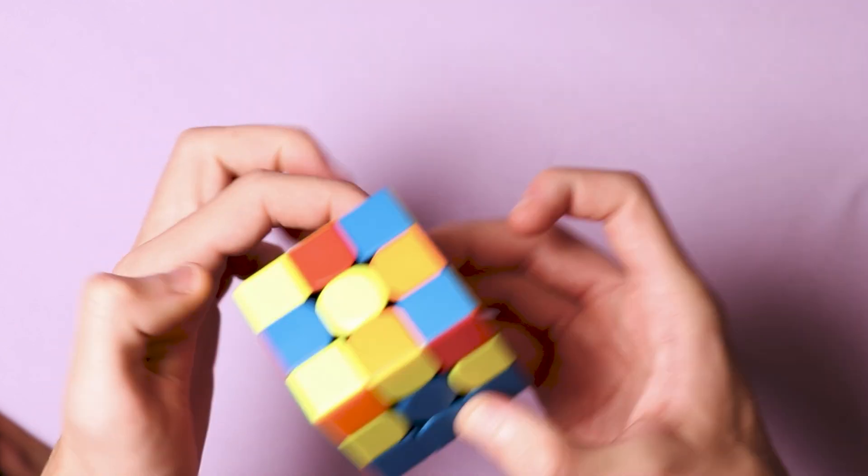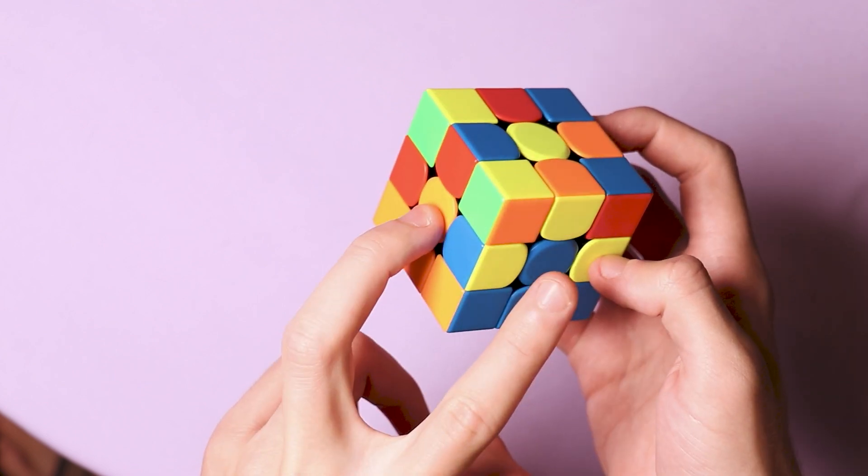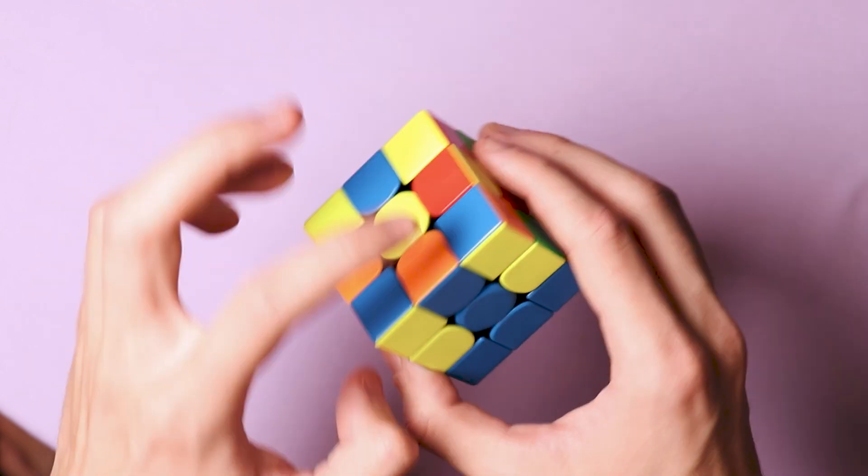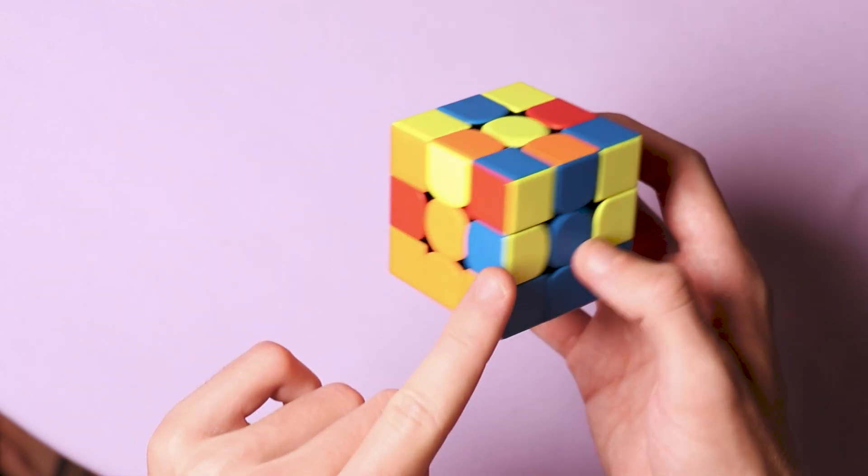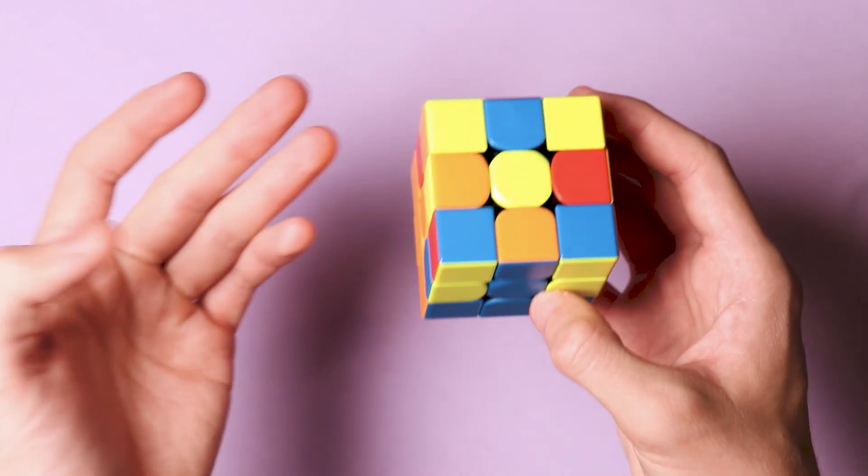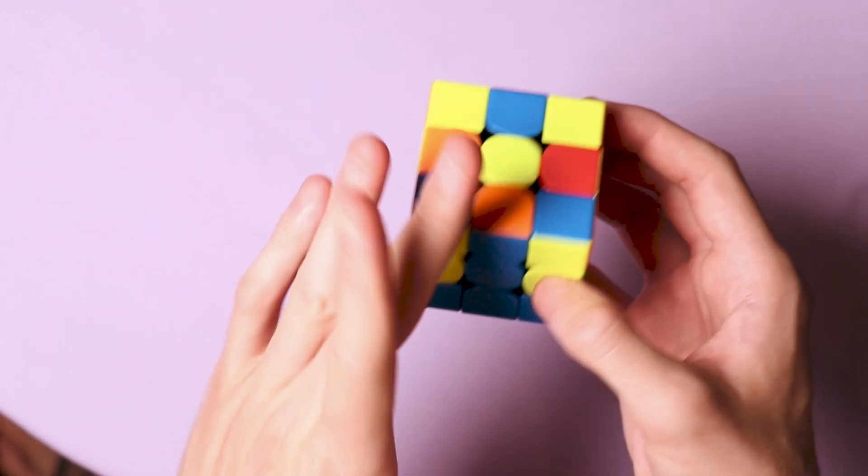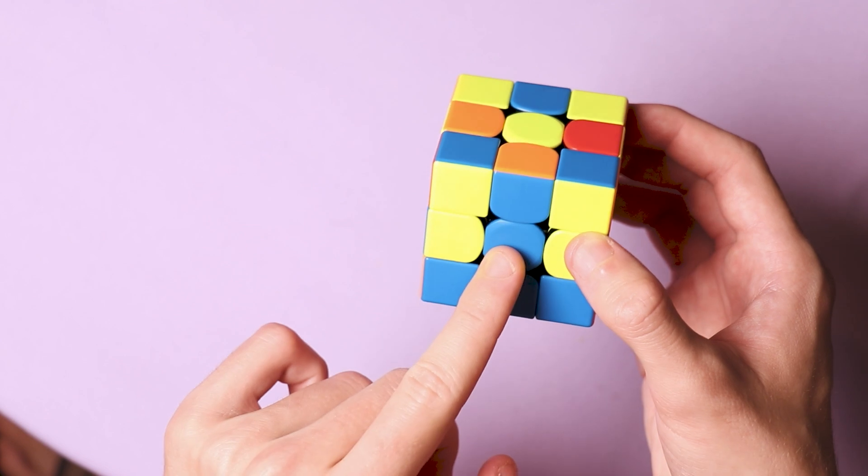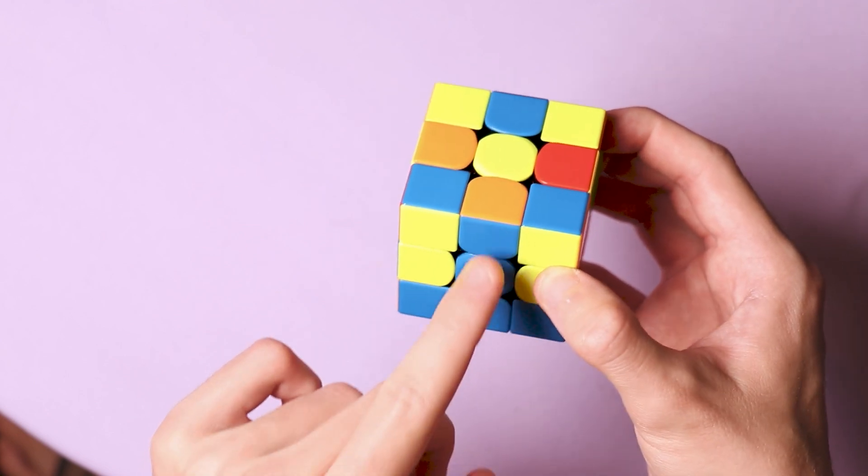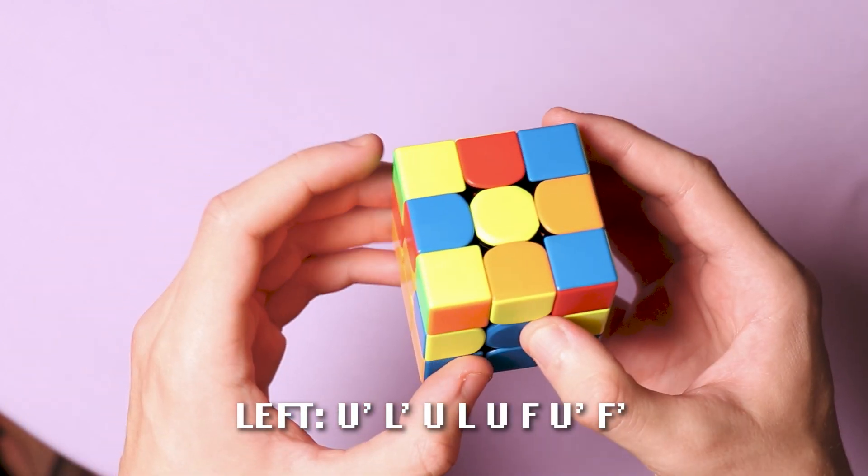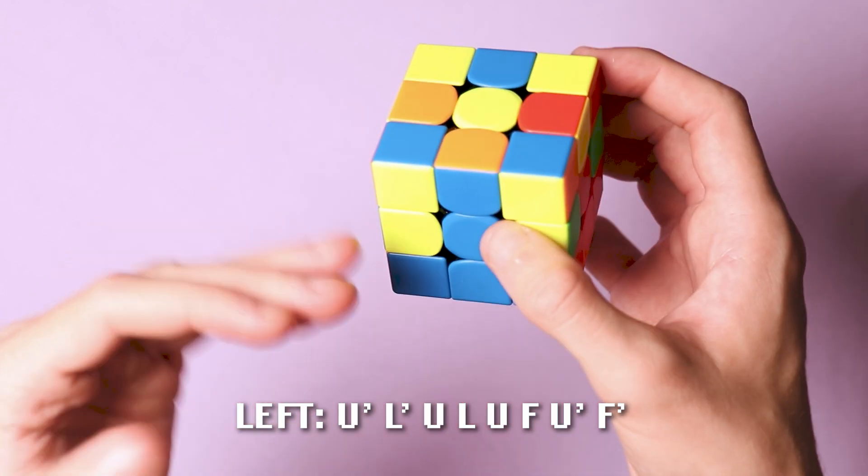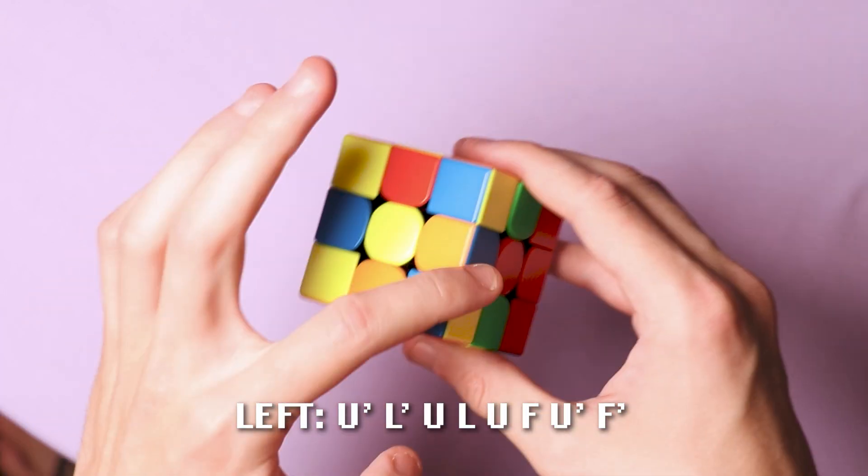We're gonna do the second layer now. Let's try to find the orange and blue edge piece. I'm gonna take this orange and blue edge piece and I need to put it right here. To do this there's an algorithm that I'll put on the screen. You're gonna look at the side that is the same color as your edge that you need to put. And if you need to put it on the left, there's an algorithm you need to follow. I understand it by rotating the edge piece.